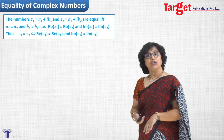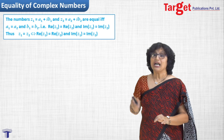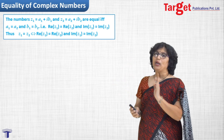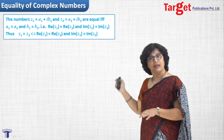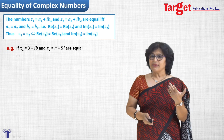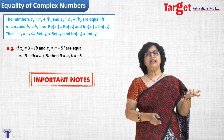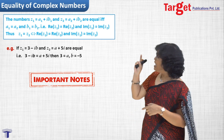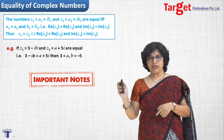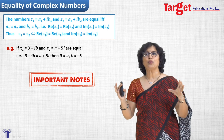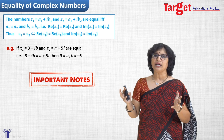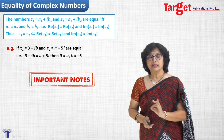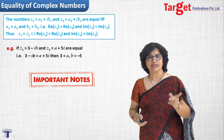So z1 equals z2 is equivalent to Re(z1) equals Re(z2) and Im(z1) equals Im(z2). For example, if z1 equals 3 minus ib and z2 equals a plus 5i, and z1 equals z2, then the real parts must be equal and the imaginary parts must be equal. Some of you may be thinking: can one complex number be smaller or greater than another?